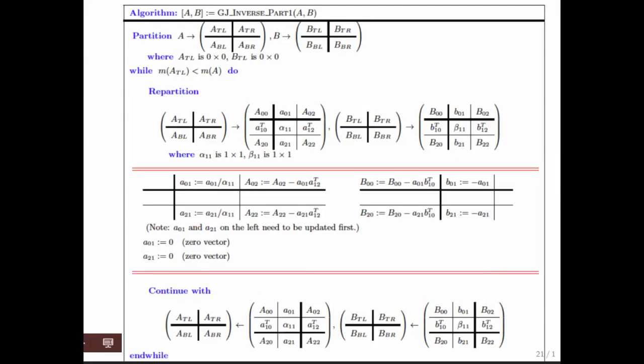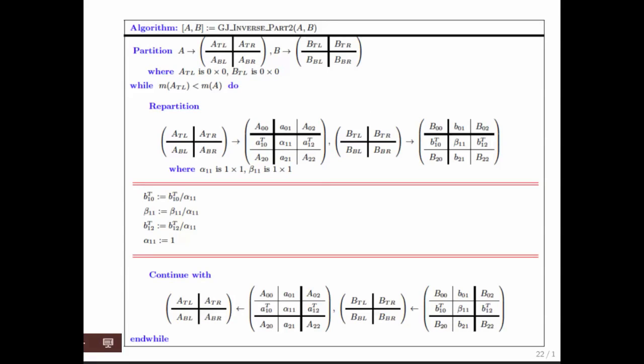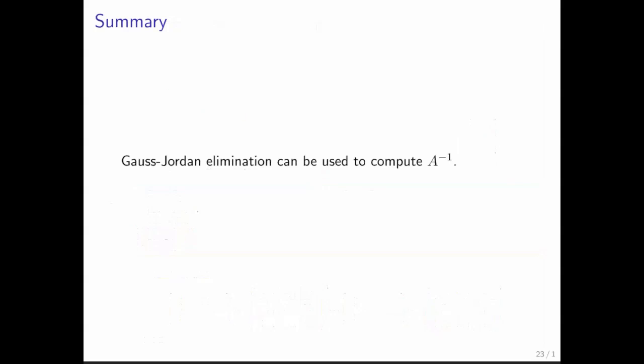If you then want to work that into an algorithm, that looks like this. And you're just going to have to carefully look at this maybe in the notes. But this is where all the action is. And then we have to do a sweep where you go through and you multiply the current row of B, which of course will hold the inverse eventually, by dividing by alpha 1, 1. And then you set that alpha 1 to 1, so that this matrix eventually becomes the identity matrix. And now what we have is a variant of Gauss-Jordan elimination that computes the inverse of a matrix.